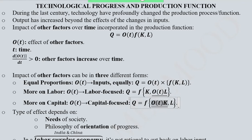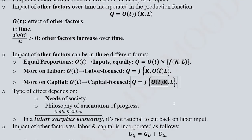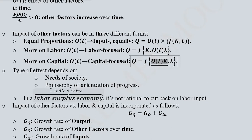And labour is remaining as it is. So these are the three ways in which we can incorporate technological progress in the production function.